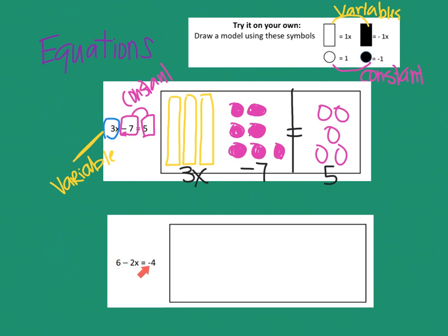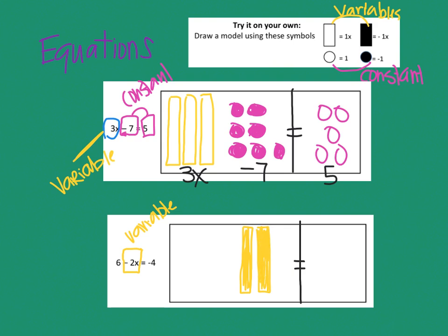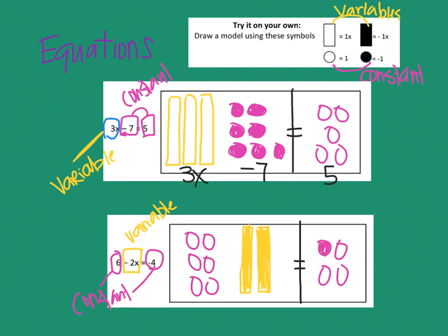The next question says 6 minus 2x equals negative 4. I'll draw the line for where my equal sign goes. This time minus 2x is the variable, so I need to shade in those 2 rectangles because they're negative. Then the 6 is a constant — positive — so I represent it with 6 circles that are not shaded in. The negative 4 is also a circle, but because it's negative, it needs to be shaded in.